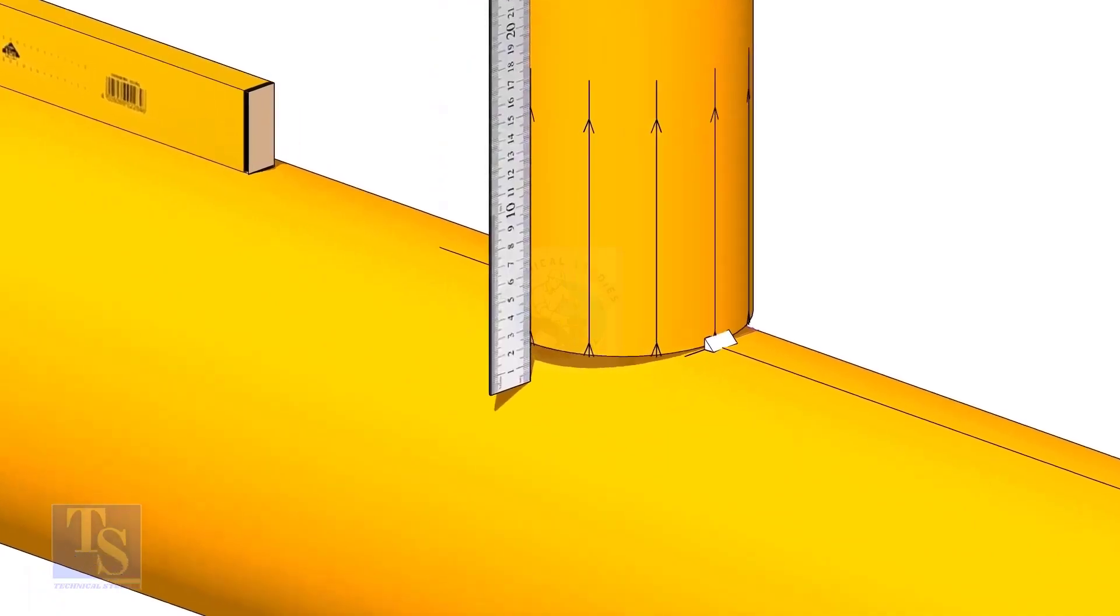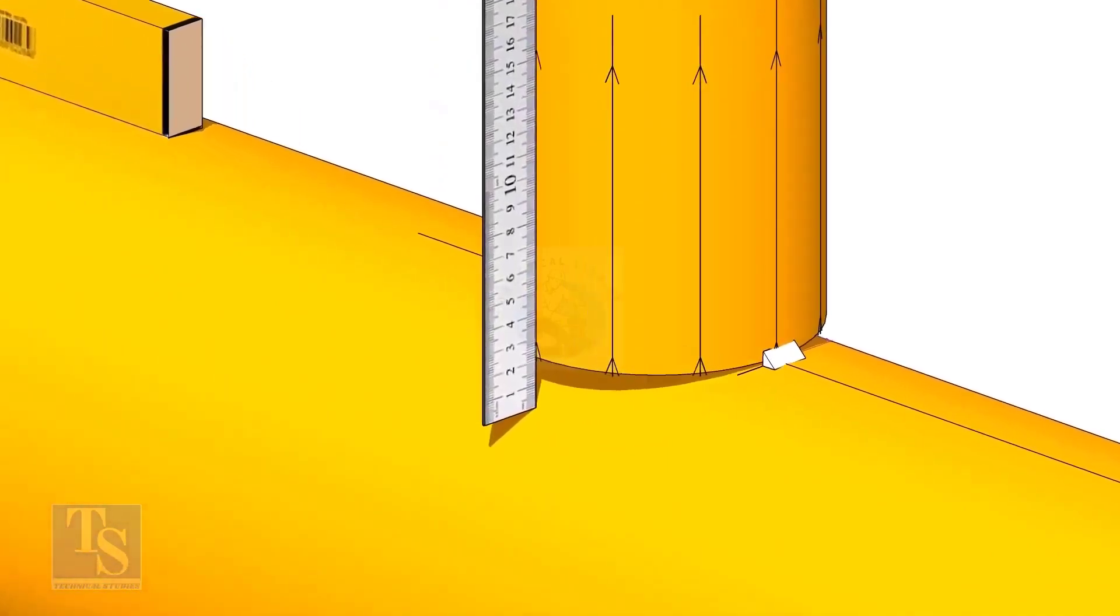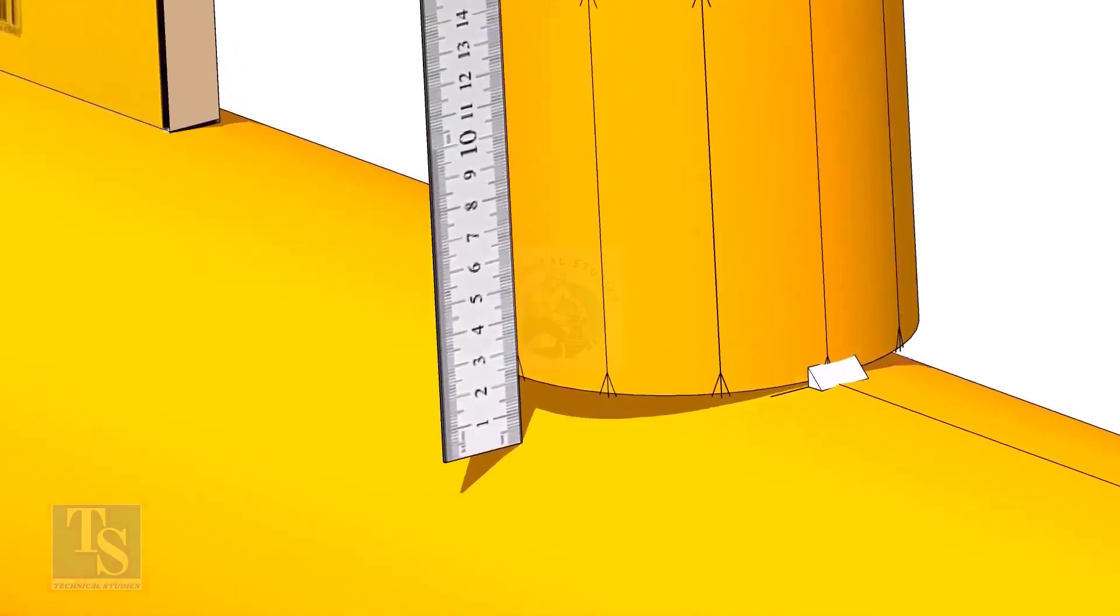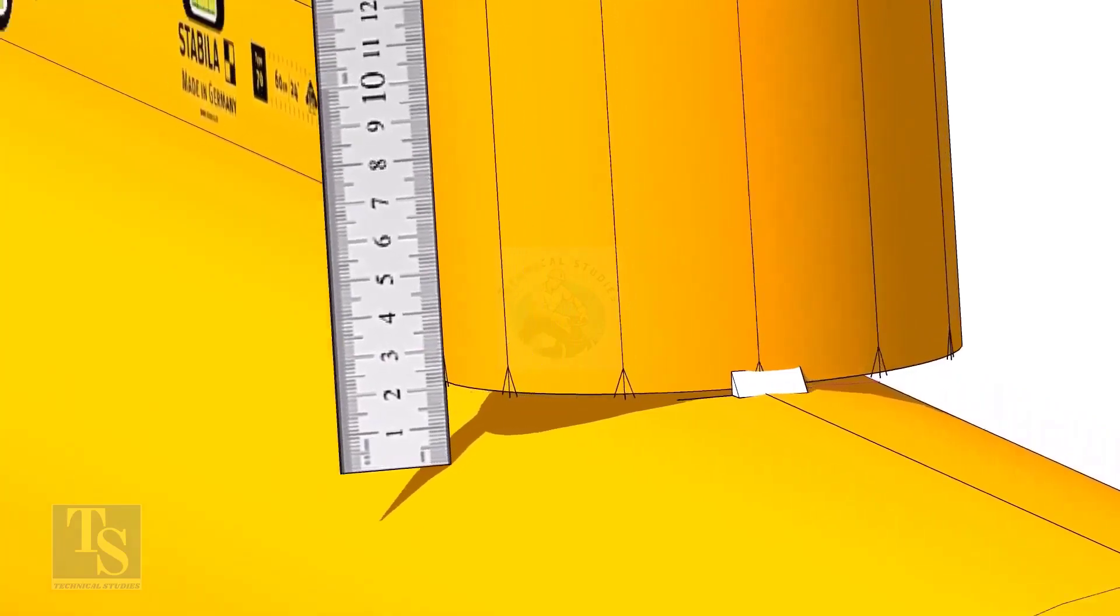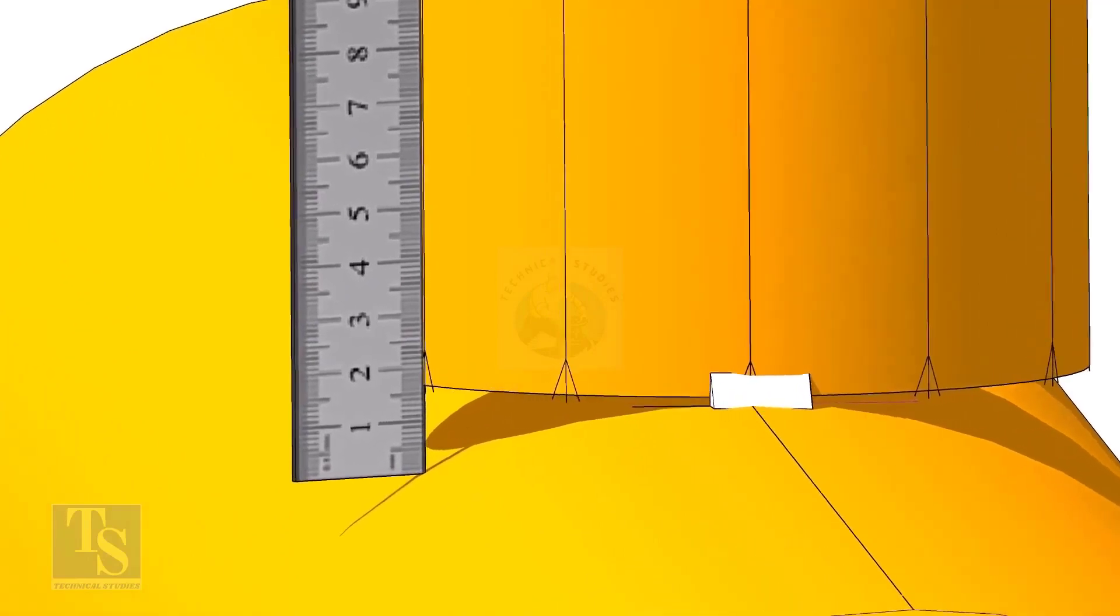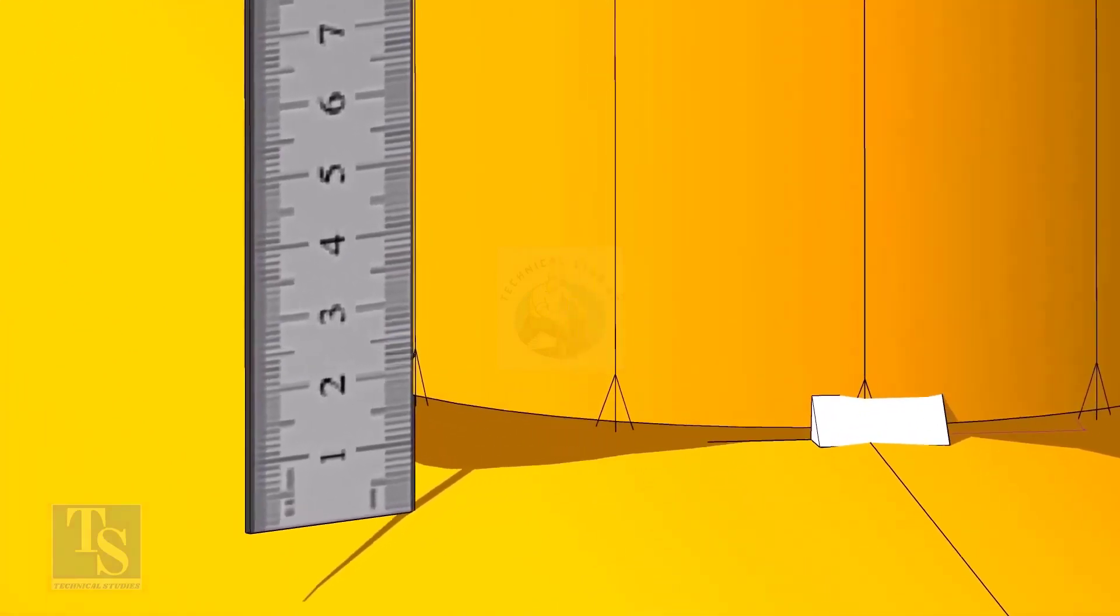Check the gap between the header and the branch as shown. When you measure, make sure the scale is vertical and is on the line on the branch pipe. Move the scale to the next vertical marking on the branch. Mark the distance on the branch from the header. In this case, it is 22 millimeters.